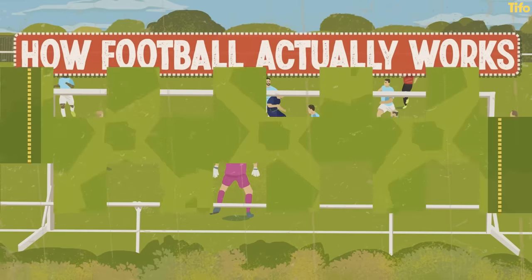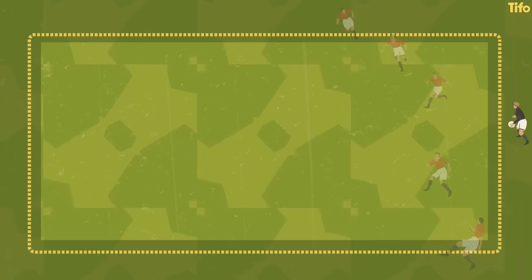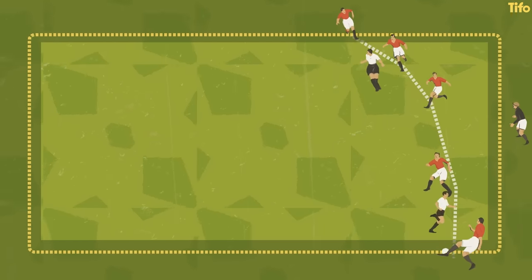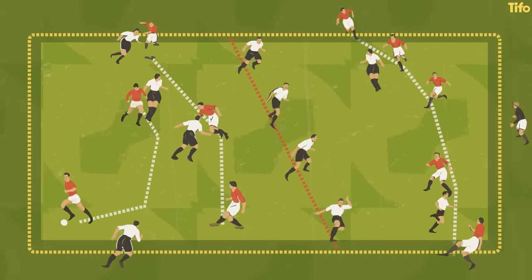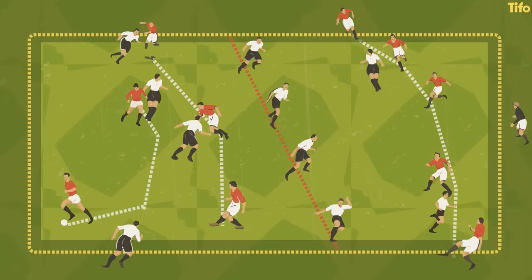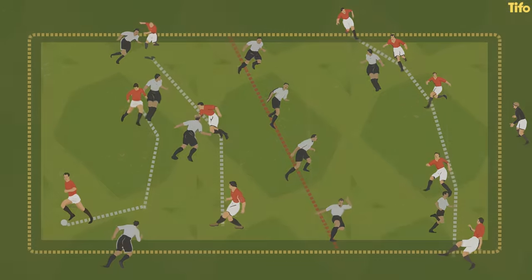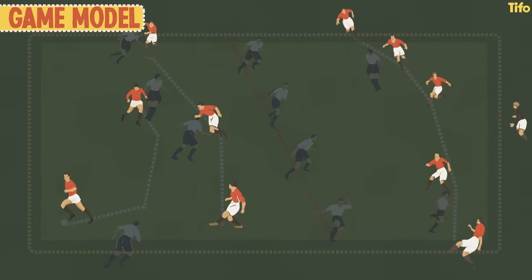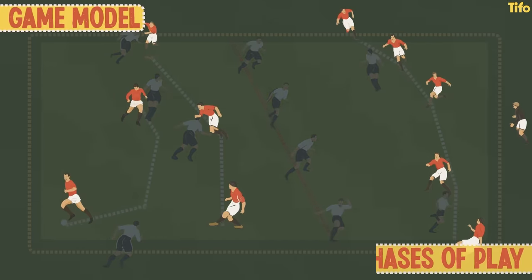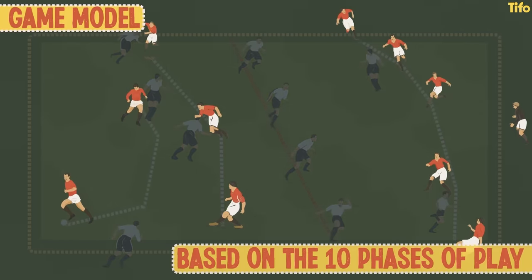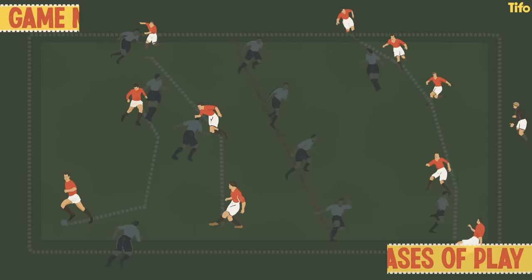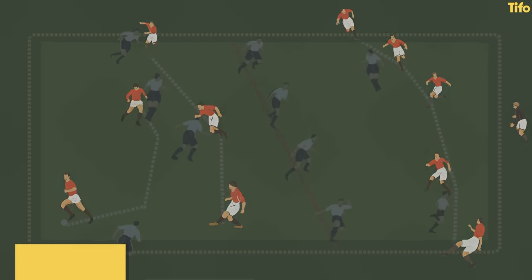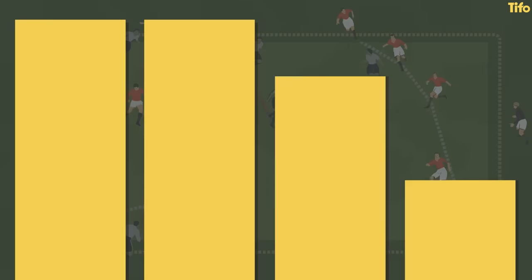You often hear supporters and commentators speak about patterns of play, philosophies or team systems in football. But what exactly do those terms refer to? Coaches and clubs at most levels have begun implementing what is known as a game model, which are often based on the ten phases of play and are used to guide the players' actions, behaviours and decision-making processes during each phase. The ten phases of play are broken down into different categories and subcategories.